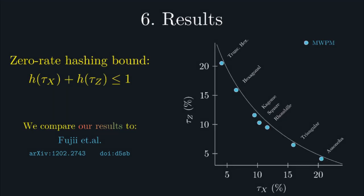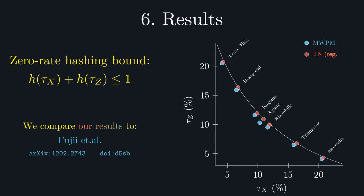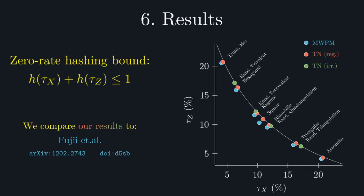We now include our data for the regular surface codes and the irregular surface codes. In all of these cases, we can see that our data lie very close to the hashing bound, suggesting all of these thresholds are, in fact, very close to optimal.